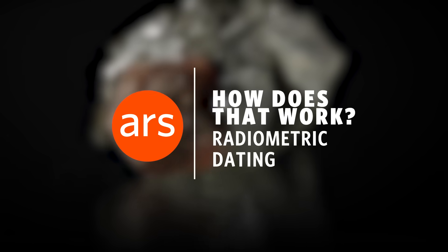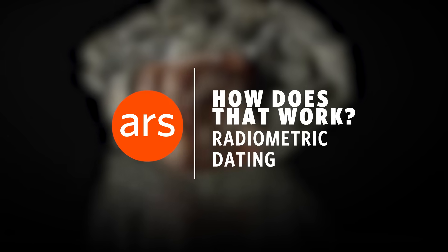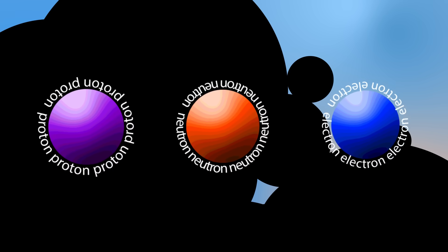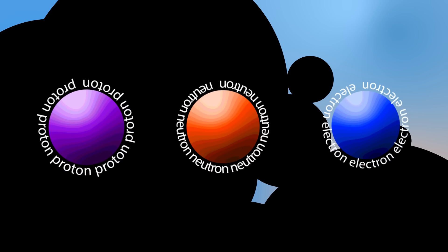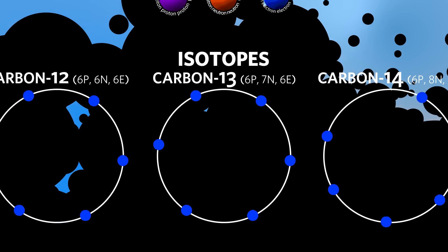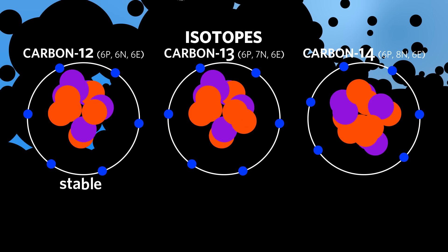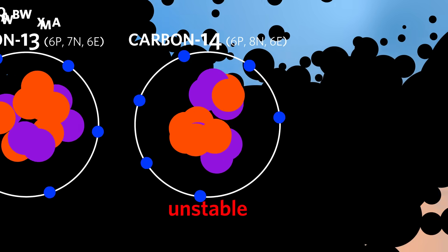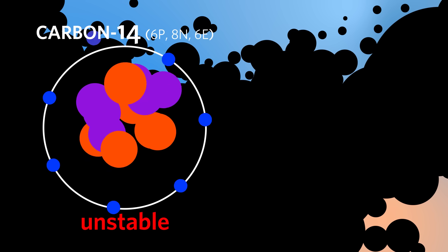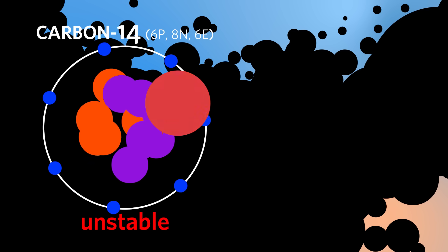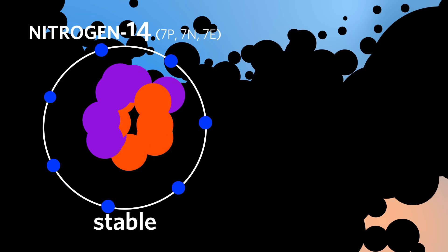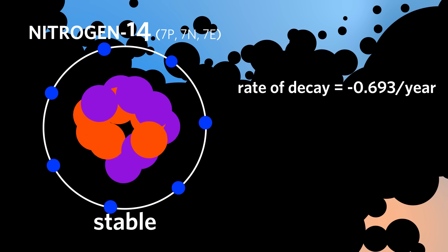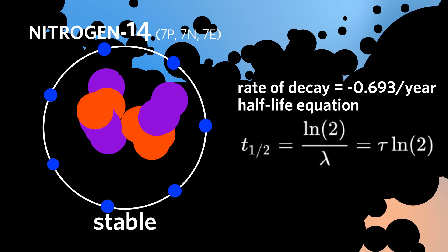The answer is a technique called radiometric dating, which lets us tell the age of certain types of rock. Radiometric dating relies on the fact that certain elements have what are called isotopes — these are versions of the atom with extra neutrons in them. Each radioactive isotope decays at a consistent rate, giving us something called the half-life, or the amount of time it takes for one half of the isotope to decay.